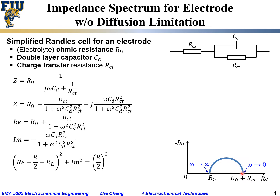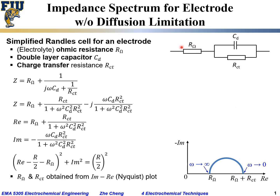Based on this, if we measure the impedance spectrum — assuming the counter electrode contribution is negligible so the overall impedance comes from the working electrode — we can extract R_ohm (primarily electrolyte resistance) and R_ct (charge transfer resistance), provided diffusion limitation is negligible and mass transfer is very fast. To get the double layer capacitance C_dl, we use the top point of the impedance semicircle.